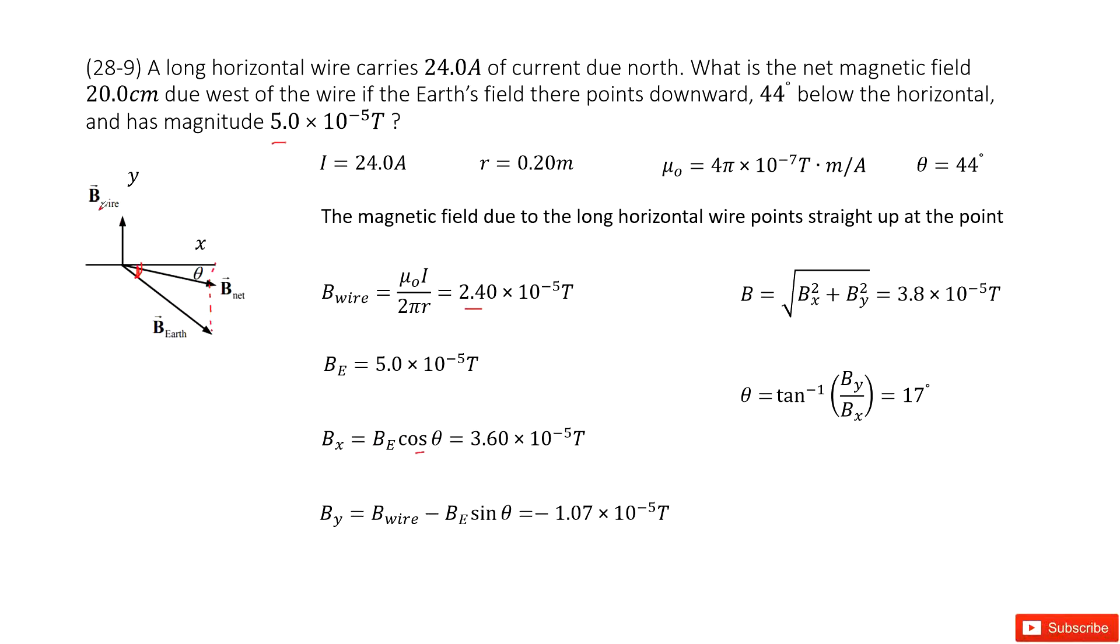For the y component, we have B_wire minus B_E sine theta. Now we have both x and y components, so we can get the magnitude of B, the addition of the two vectors, and the angle theta. Thank you.